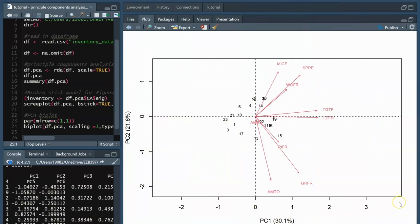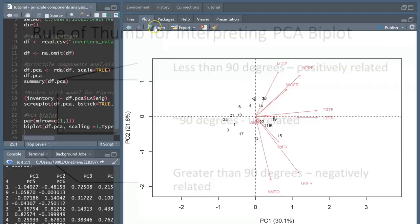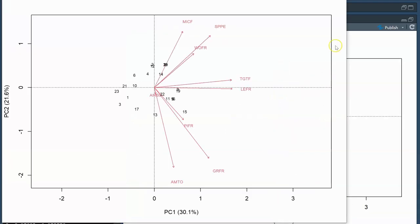Now when we render our biplot, it can look a little bit overwhelming at first, but there is a simple way to identify the major trends in a PCA biplot. The general rule of thumb is that the angles between the vectors tell you the relatedness between two species. So two species vectors less than 90 degrees are positively related, and the smaller the angle, the stronger that relationship is. Vectors at 90 degrees are unrelated from each other, and vectors greater than 90 degrees are negatively related, with that relationship strengthening with increasing angle.